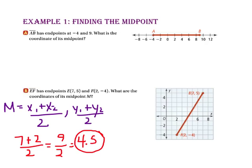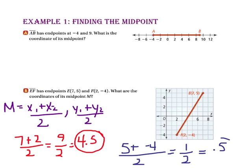Now let's look at the y-coordinates. E has a y-coordinate of 5 and F has a y-coordinate of negative 4. So we take the average of 5 and negative 4: 5 plus negative 4 is 1, divided by 2 is one-half, or 0.5. So the midpoint of segment EF is (4.5, 0.5). Let's check: 4.5 on the x-coordinate is about here, 0.5 on the y-coordinate is about here, so our midpoint should be about here.